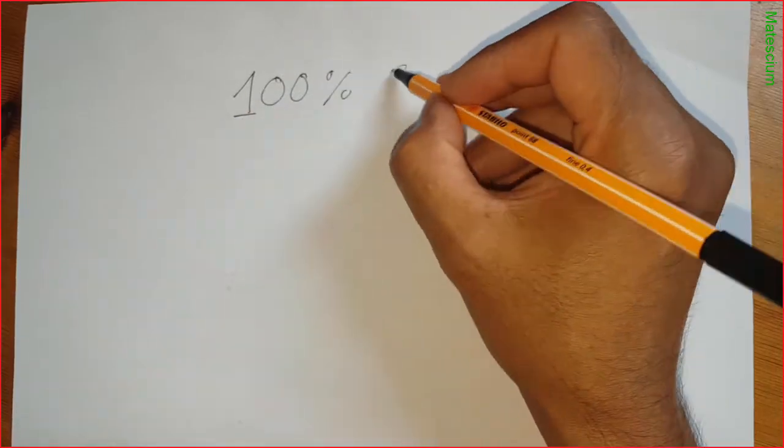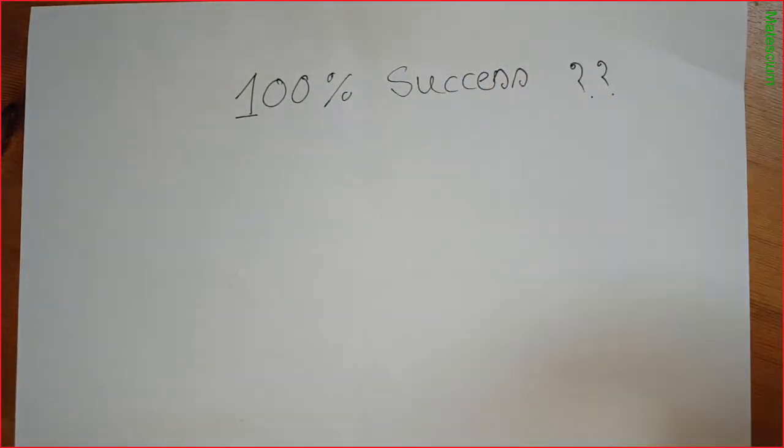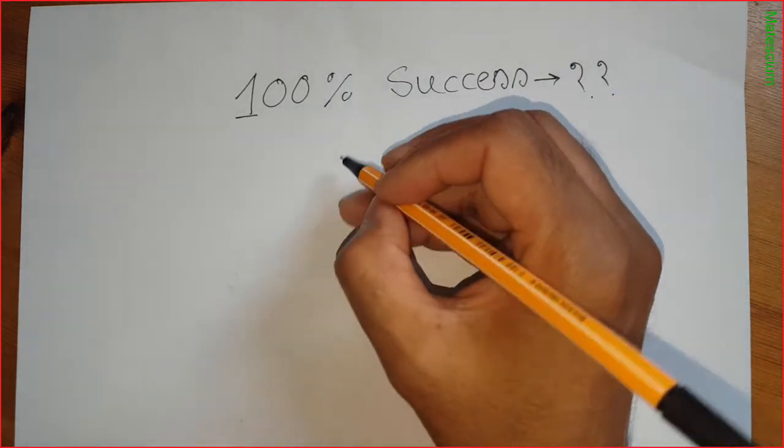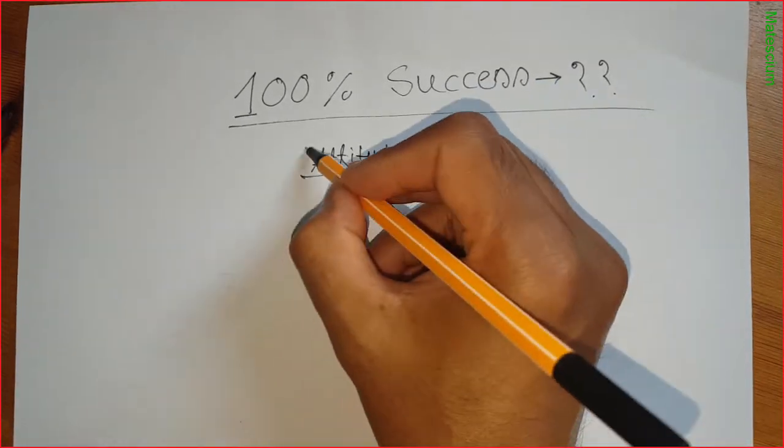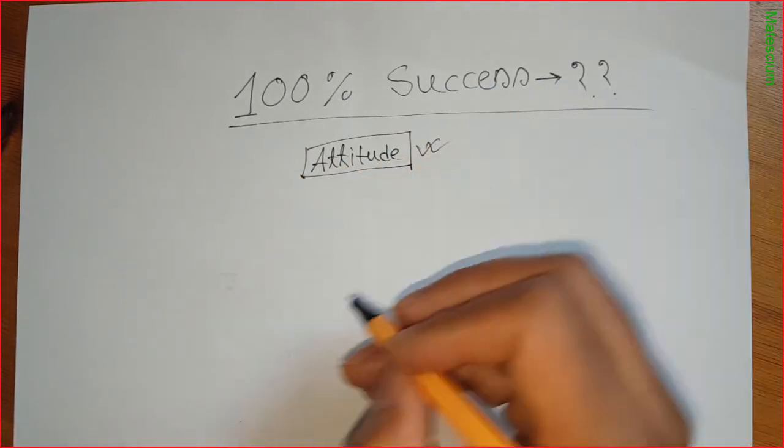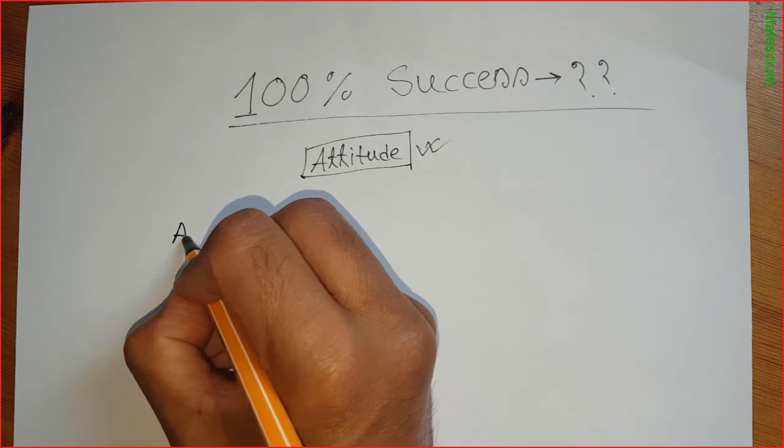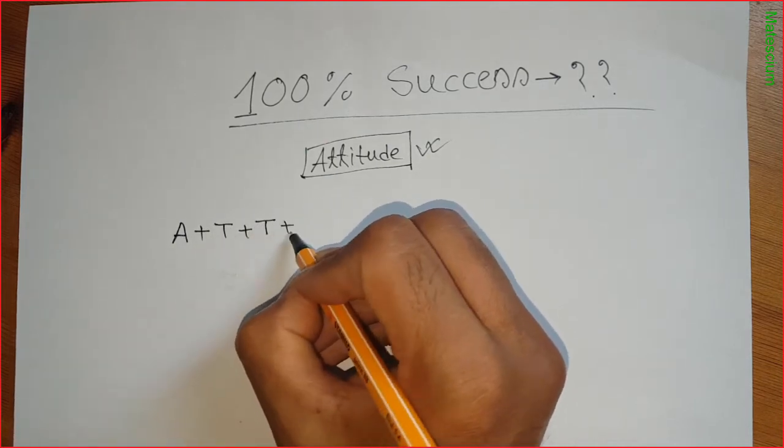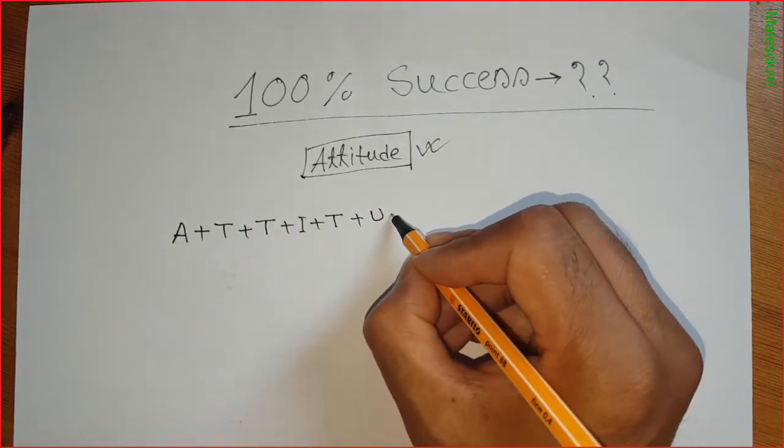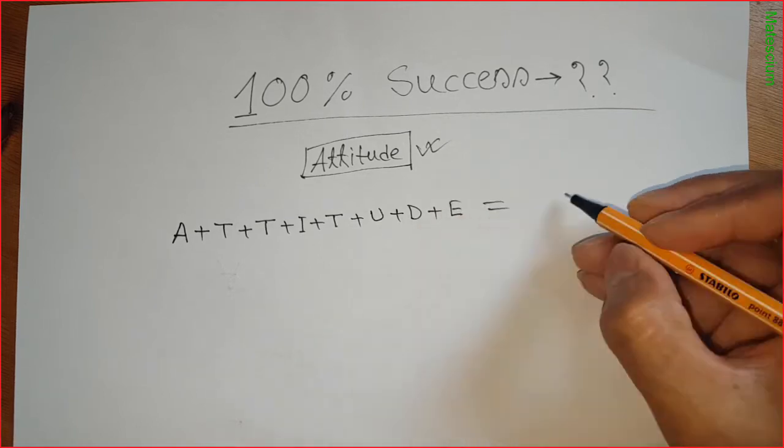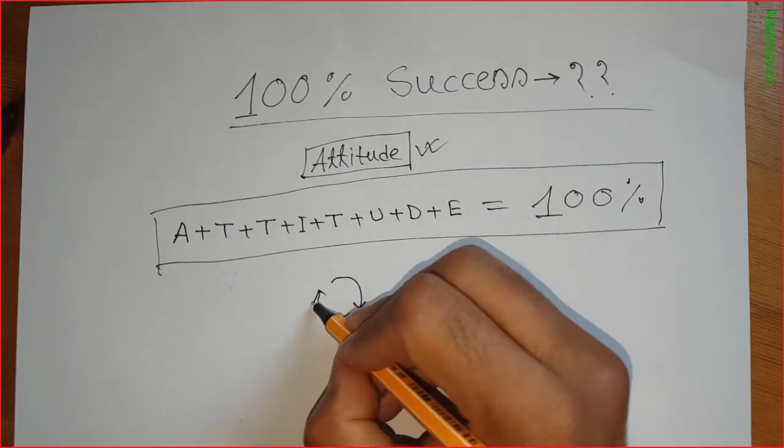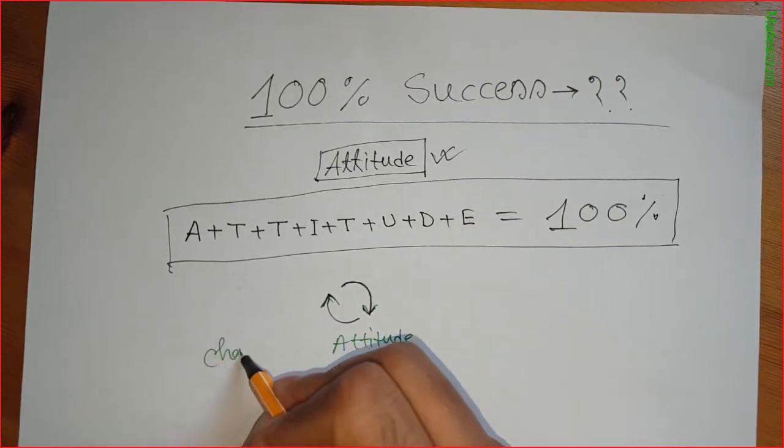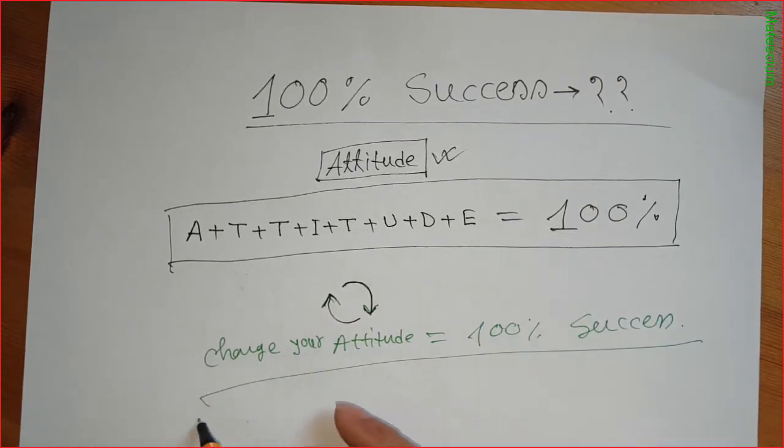Which thing can give you 100 percent success? The answer is everyone has that thing. Yes, we have it, and it is attitude. Yes, the right attitude can give us 100 percent success. See here, attitude is 100 percent. That means we can get success completely by changing our attitude. So change your attitude, change your life.